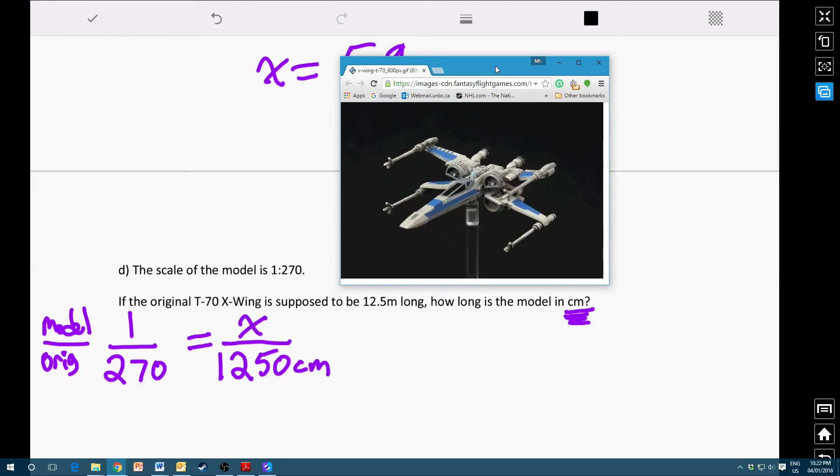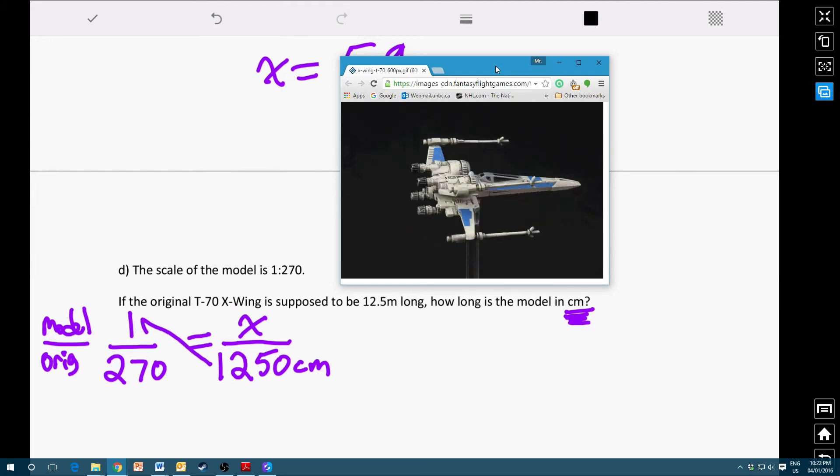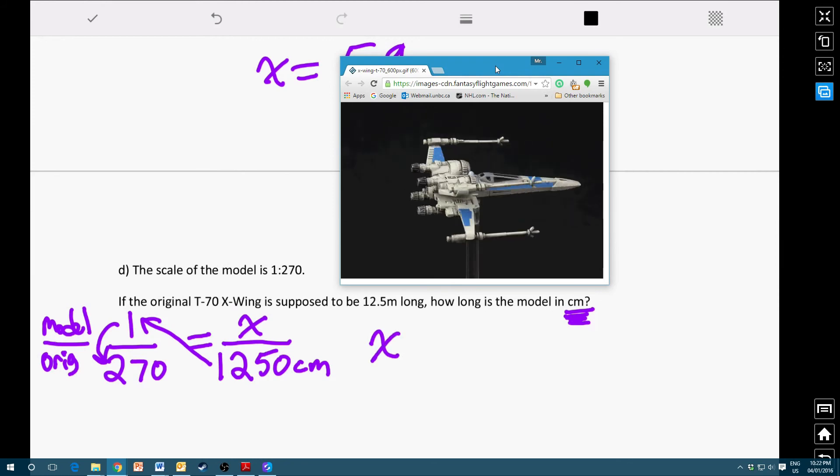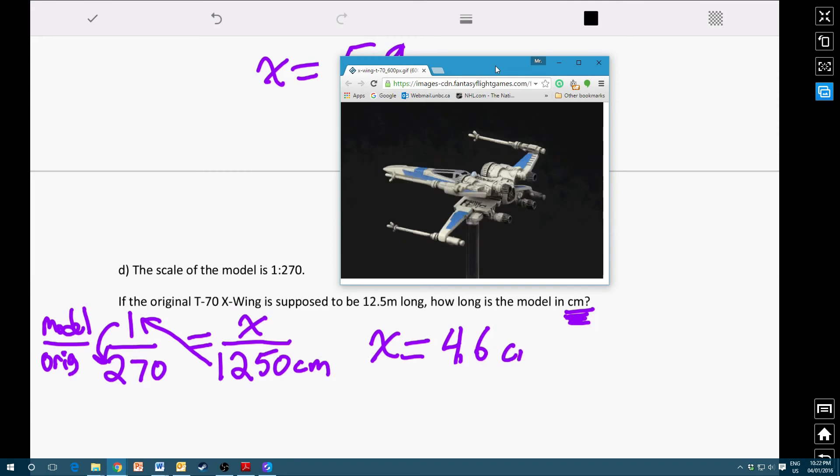Using this scale statement, it will just be a simple cross-multiply and divide. So we'll take our 1250 centimeters of the original, and we'll multiply by one first, then divide by 270. So the length of the model, according to this equation, is going to be about 4.6 centimeters long.